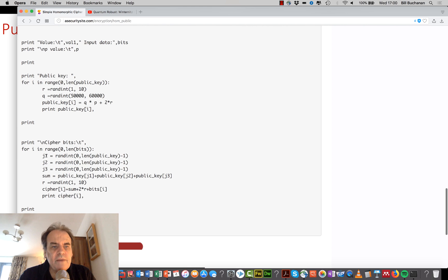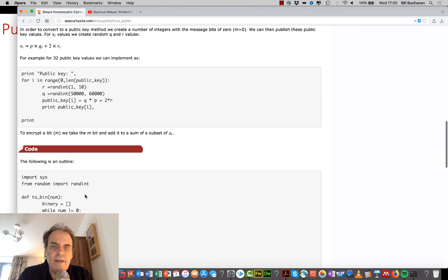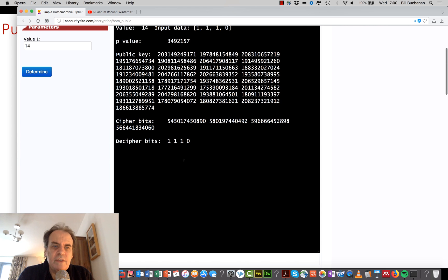Next, we cipher by picking off three values from our public key and adding them together. We'll create a random number again, and then we will cipher our bits. There's our message there. And we'll now cipher with the sum plus two times this random value, small random values. And then that becomes our cipher output, as we see here.